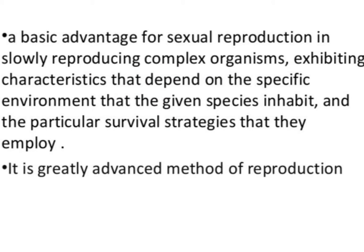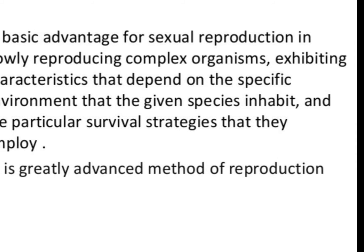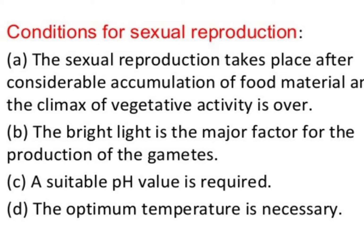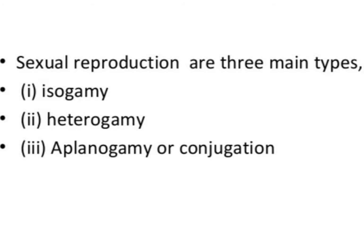A basic advantage for sexual reproduction in slowly reproducing complex organisms is that it exhibits characteristics depending on the specific environment that the given species inhabits and the particular survival strategies they employ. It is a greatly advanced method of reproduction. Conditions for sexual reproduction include considerable accumulation of food material, completion of vegetative activity, bright light as a major factor for gamete production, suitable pH, and optimum temperature.